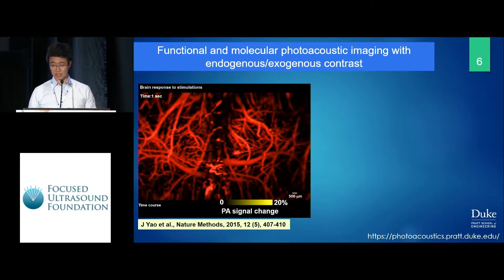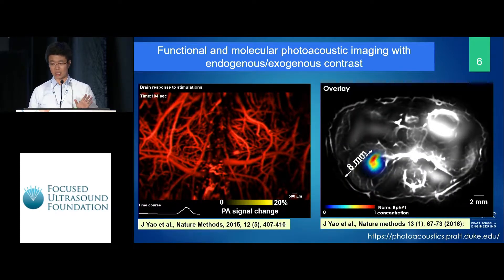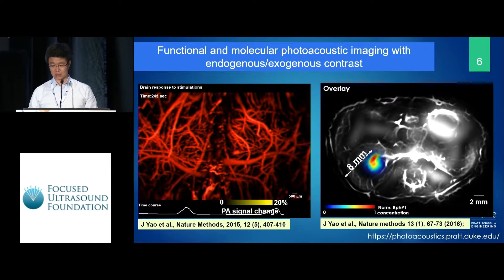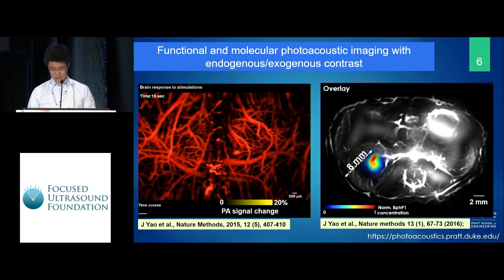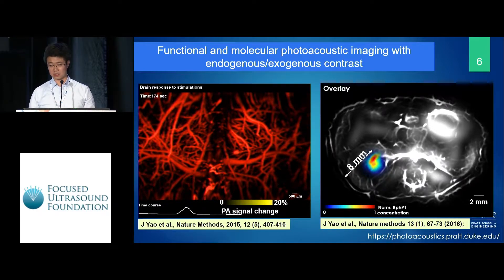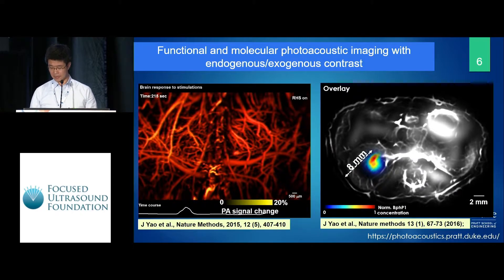We can do functional studies. We can look at brain functions as we stimulate the animals. We can also image endogenous and exogenous contrast as long as we can enable the cells to absorb light. This is an example of a tumor in the mouse kidney, which gives us very good contrast between the tumor cells and the background blood vessels.